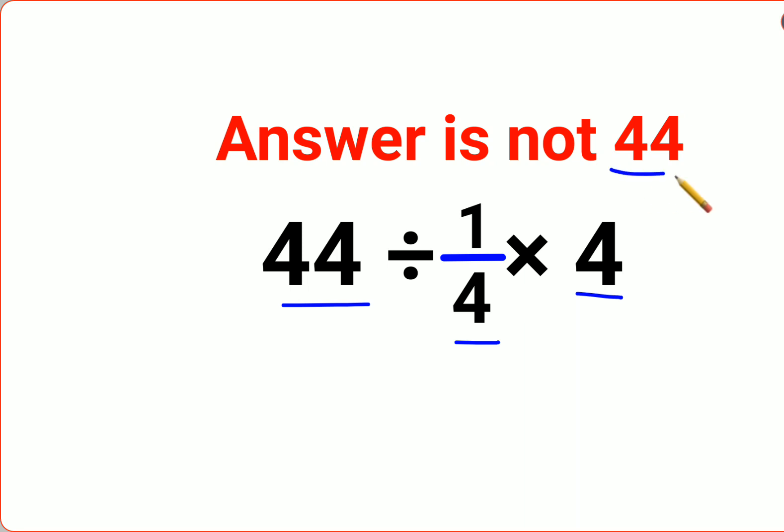So a lot of people thought that the answer for this one is supposed to be 44 because this 4 into 4 will get cancelled. So basically you are doing 44 divided by 1. So answer comes out to be 44. Now that my dear friends is absolutely incorrect.